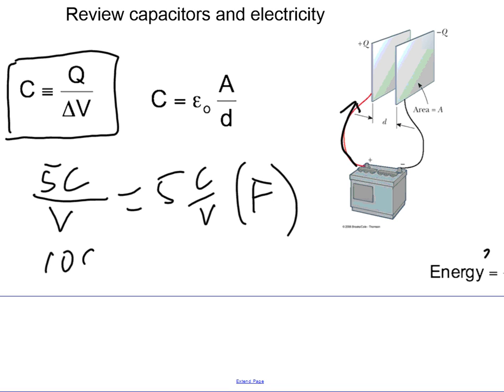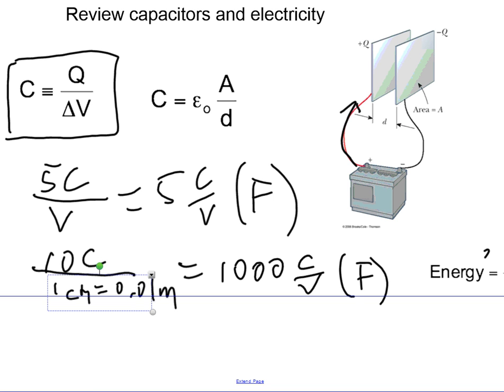To find out what the capacitance is, basically you have to divide the amount of charge deposited in the plates divided by the distance between the plates. For example, 10 coulombs, the distance between the plates is one centimeter, which is 0.01 meters, you would say that the capacitance is 1000 coulombs per volt or 1000 farads.